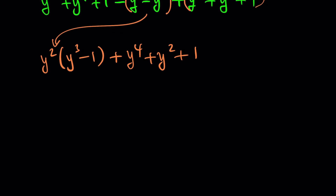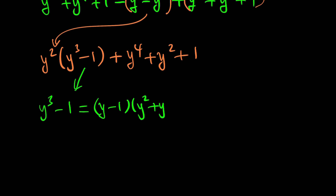Here we have y cubed minus one, which is a difference of two cubes. So y cubed minus one can be factored into y minus one times y squared plus y plus one.